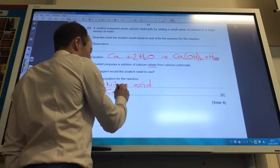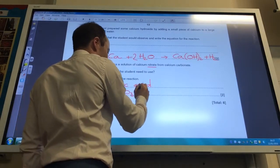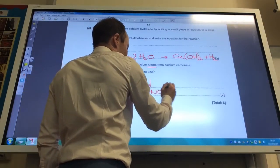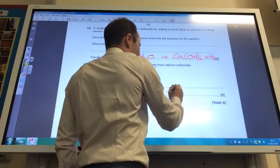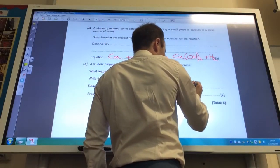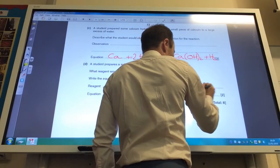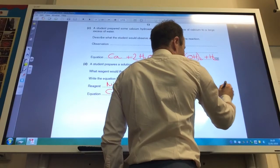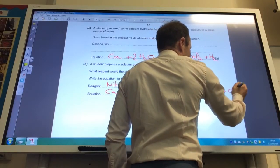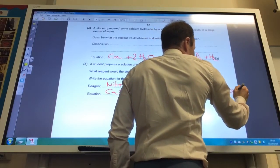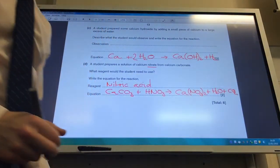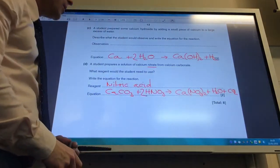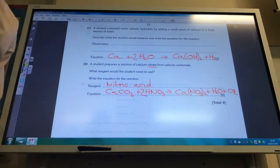Write an equation for this. Calcium carbonate CaCO3 plus HNO3 for nitric acid is going to give me calcium nitrate plus water. And because it's a carbonate, plus CO2 as well. To balance that, you've got two nitrates there, so you need two nitric acids like so.